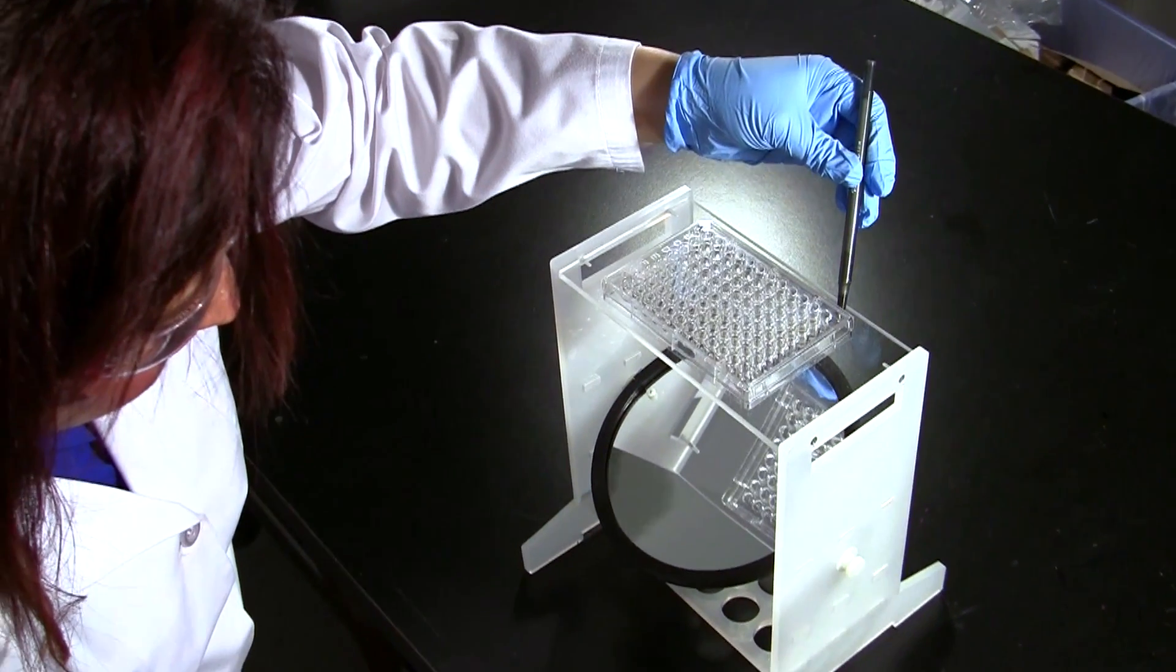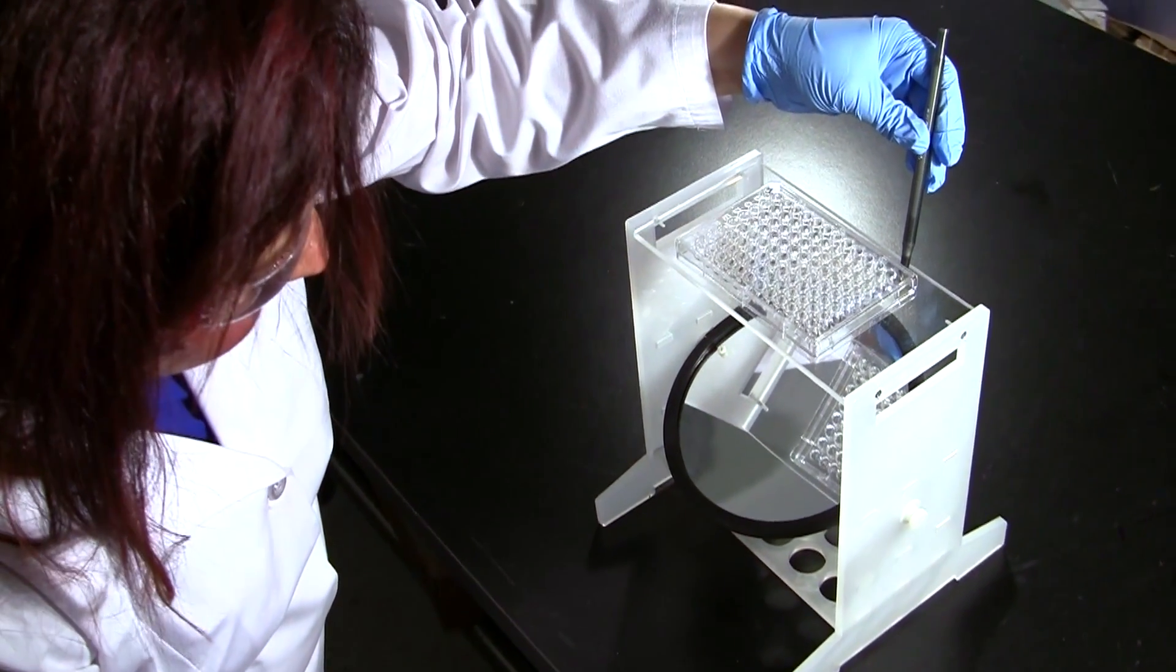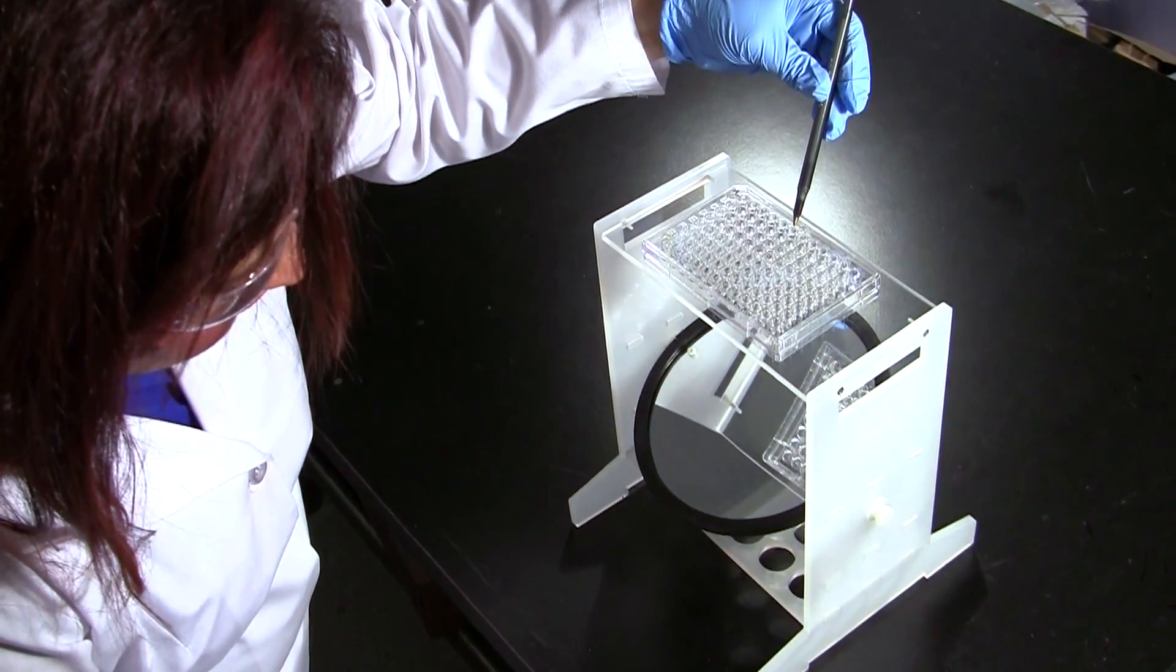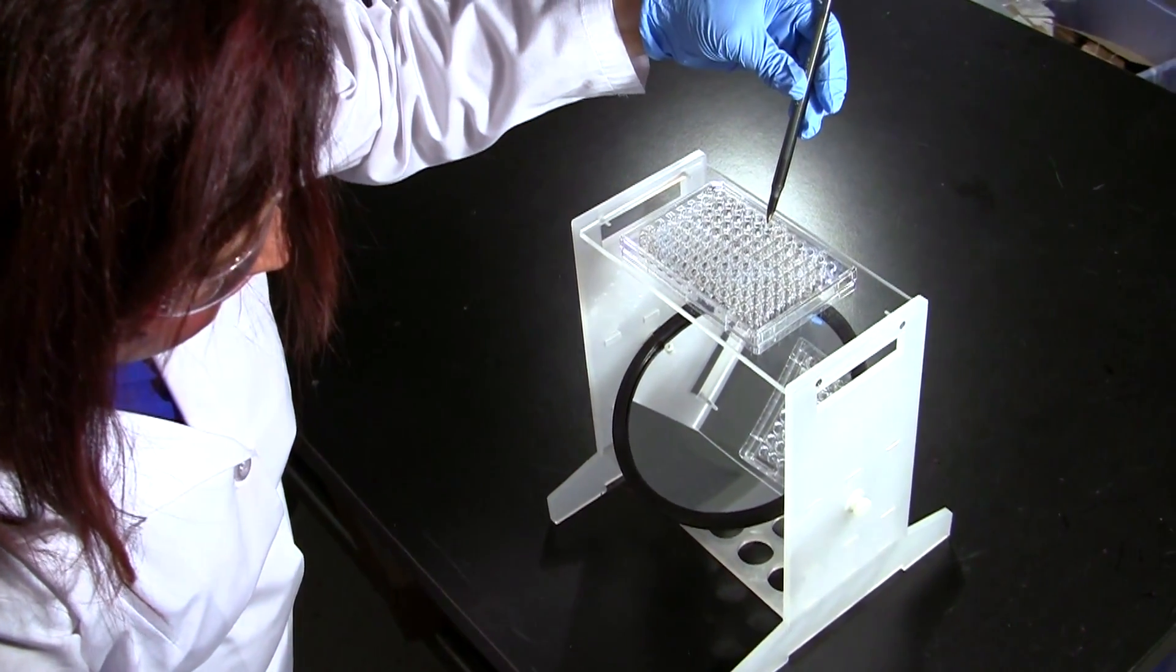As you can see, column 12 is the growth control where you see turbidity, whereas column number 6 is actually the MIC for this compound because this is a clear well and has no growth.